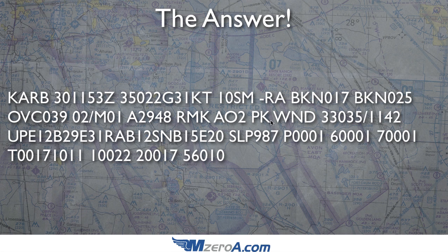PK WND means peak wind — exactly what it says: the most intense wind they've had over the past hour. The peak wind came from 330 at 35 knots. When did it happen? At 1142 Zulu — not too long ago. So they're getting some serious 35-knot gusts occasionally. That is their peak wind so far at Ann Arbor, Michigan — that's a serious wind.